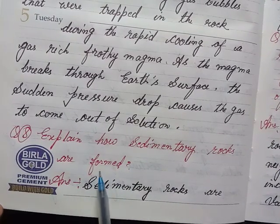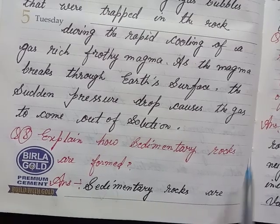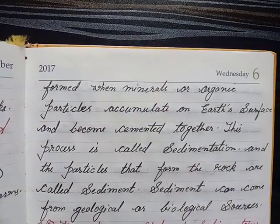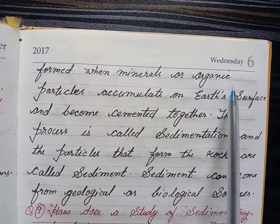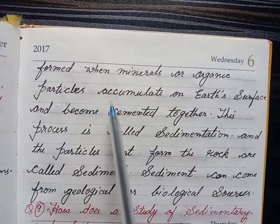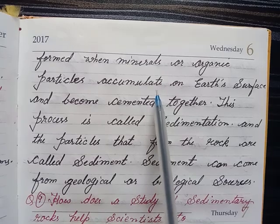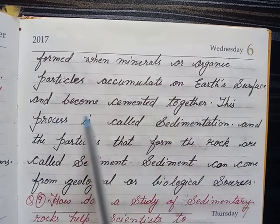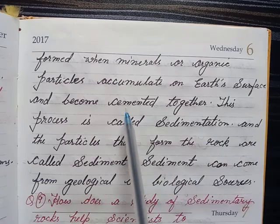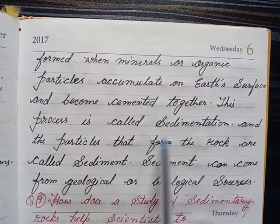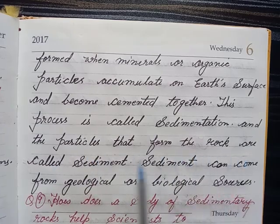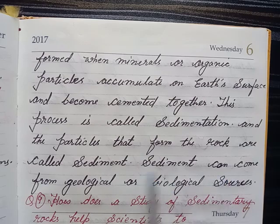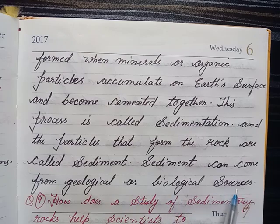Question eight: explain how sedimentary rocks are formed. Answer: sedimentary rocks are formed when minerals or organic particles accumulate on the earth's surface and become cemented together. This process is called sedimentation and the particles that form the rocks are called sediment. Sediment can come from geological or biological sources.